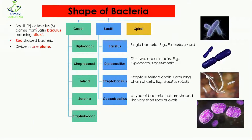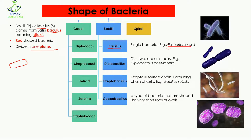Then comes bacilli. Bacilli is a plural word while bacillus is a singular word. This word comes from the Latin 'bacillus,' which means stick. So bacilli are actually rod-shaped bacteria, just like a stick. Their plane of division is just one. If a single rod-shaped bacterium is present, it will be known as bacillus.